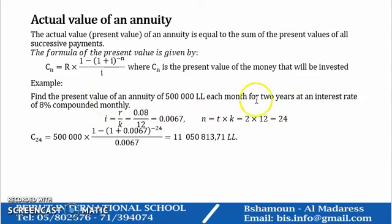We can determine C after 24 months. It will equal 11 million 50,813.71 Lebanese lira.